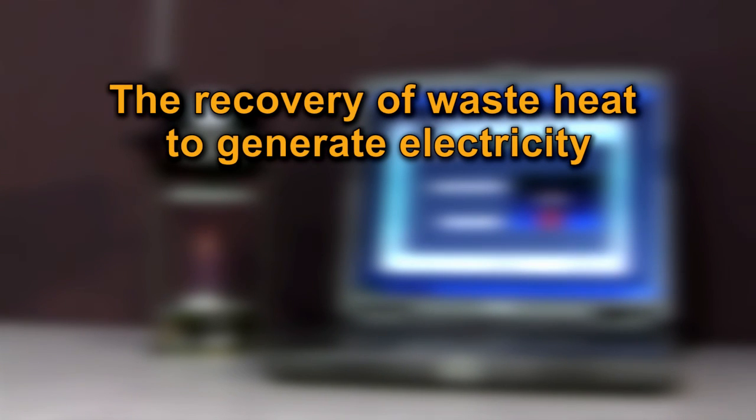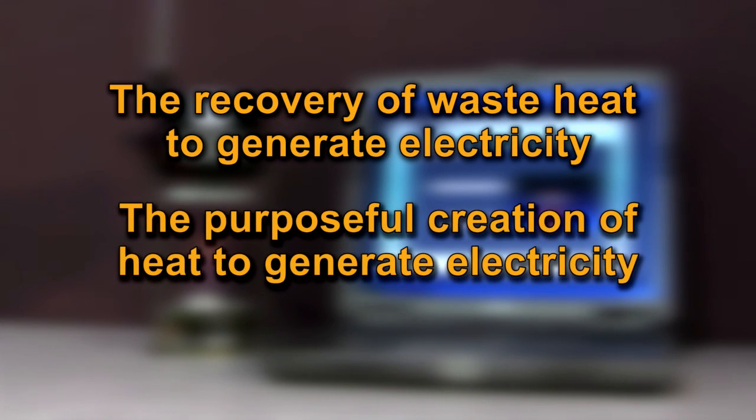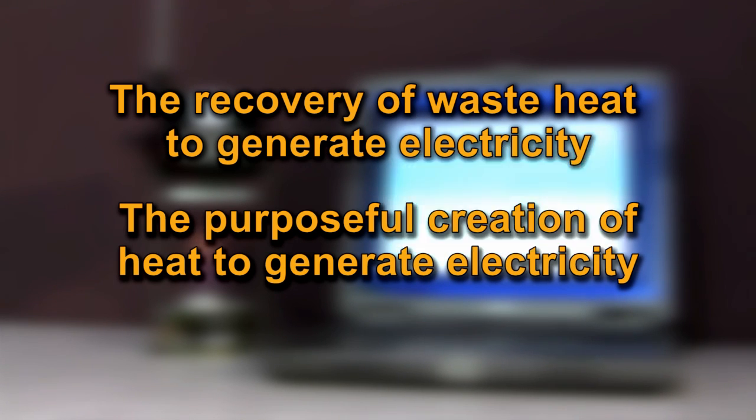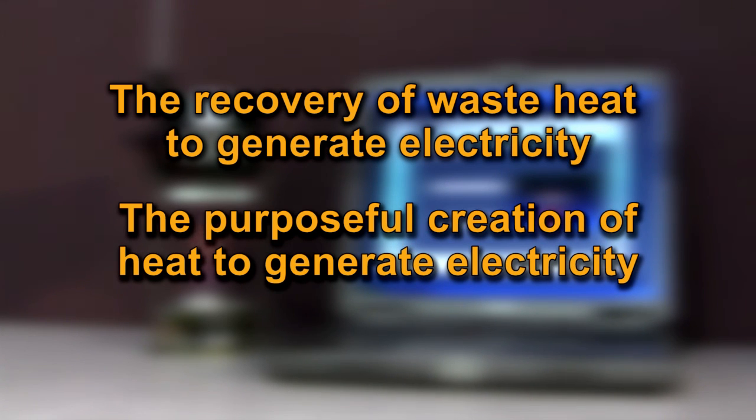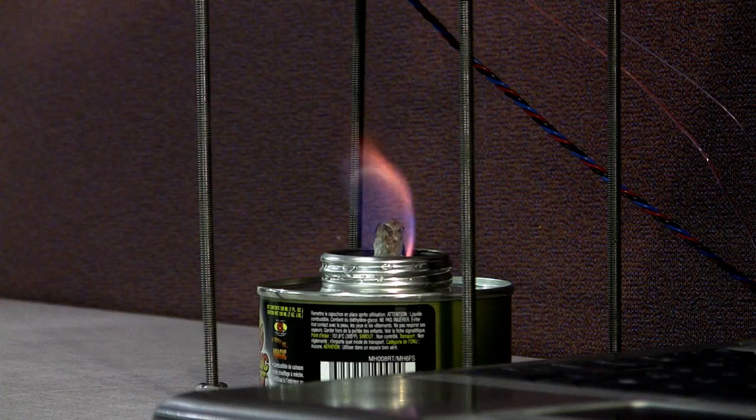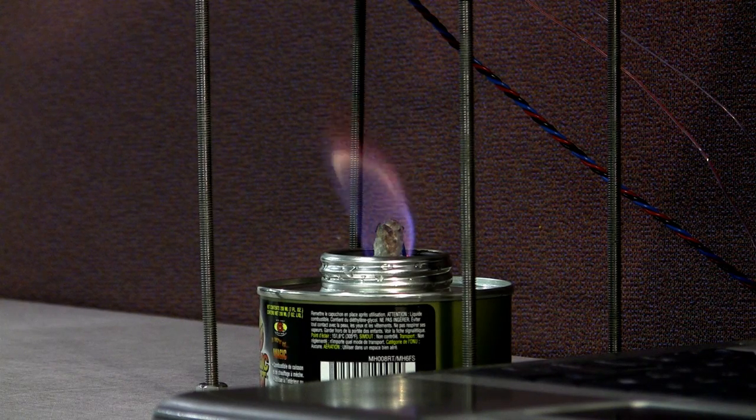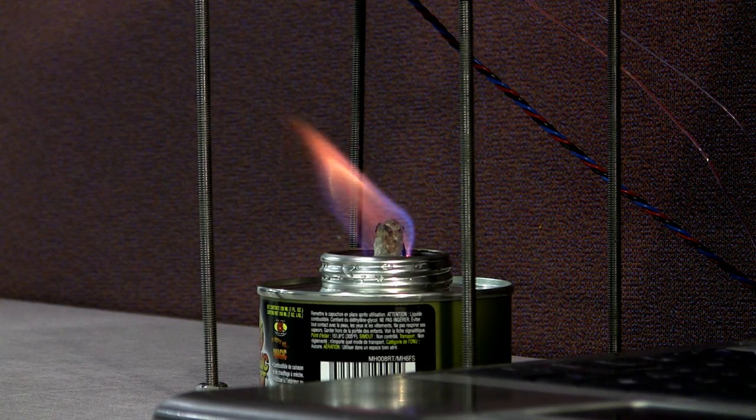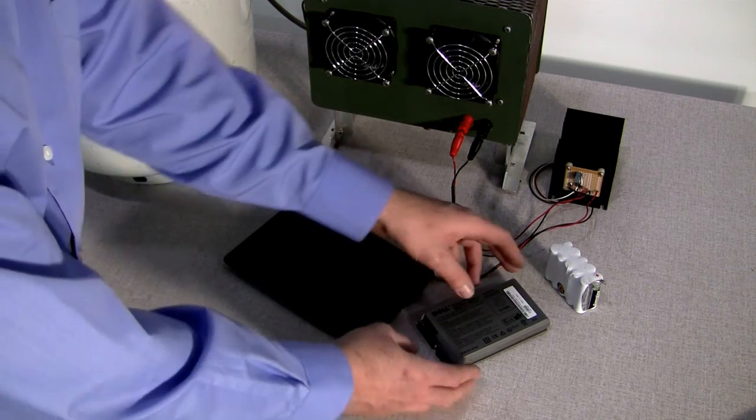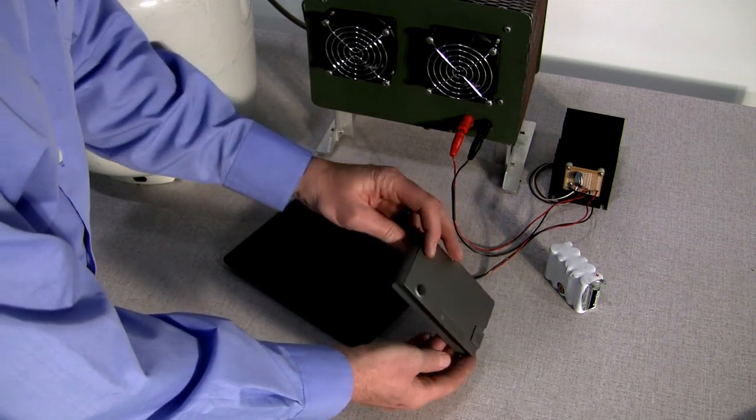First, there is recovery of waste heat to generate electricity. And secondly, the purposeful creation of heat to generate electricity. In both categories, the most chaotic form of energy, being heat, is transformed into electricity that can be used to power devices or charge batteries, which will in turn power devices.